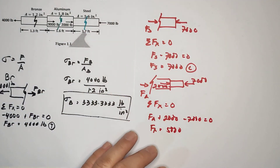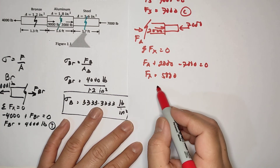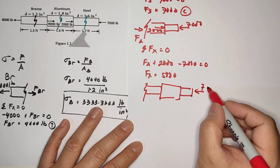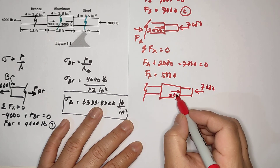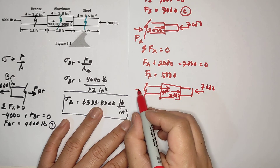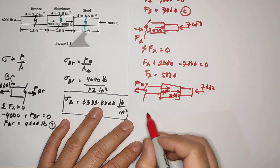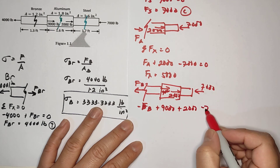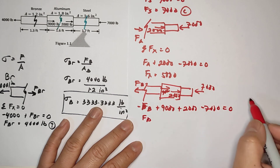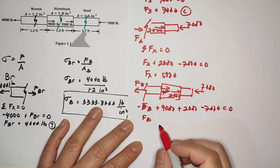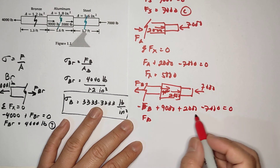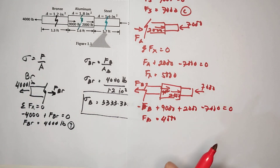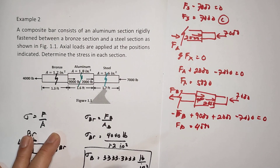You can cut from either side and get the same answer. For bronze from the right side: you have 7,000, 2,000, and 9,000. Summation: negative FB plus 9,000 plus 2,000 minus 7,000 equals zero, so FB equals 4,000 in tension — which also matches. So that confirms the answer for example number 2.